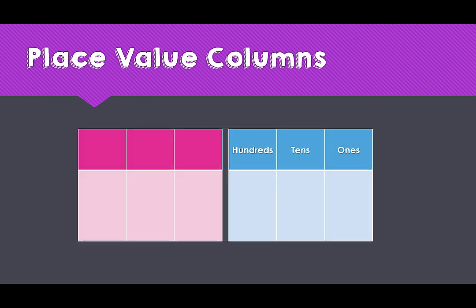When we have numbers up to and including six digits, we then continue moving from right to left with the thousands, tens of thousands, and hundreds of thousands.